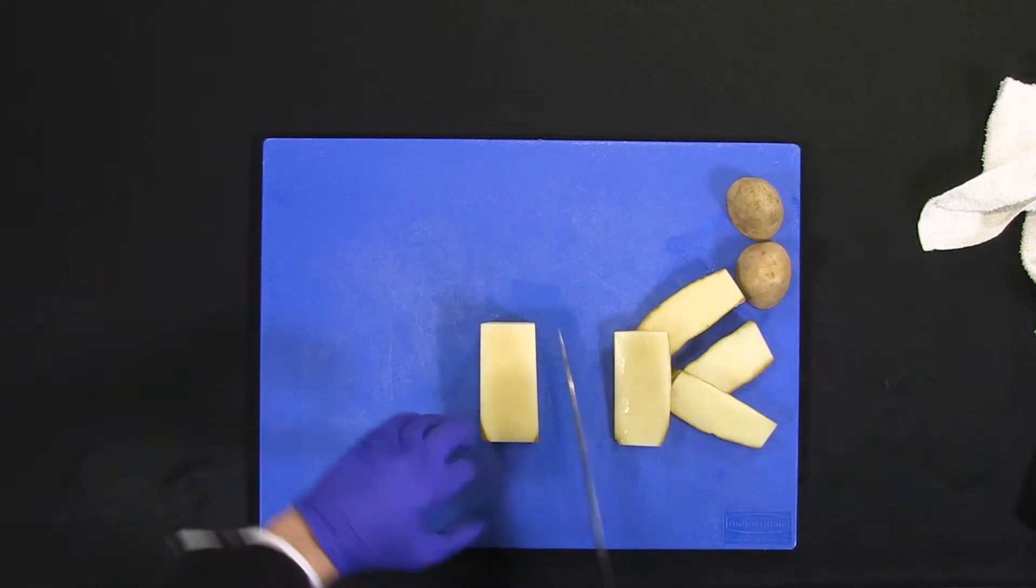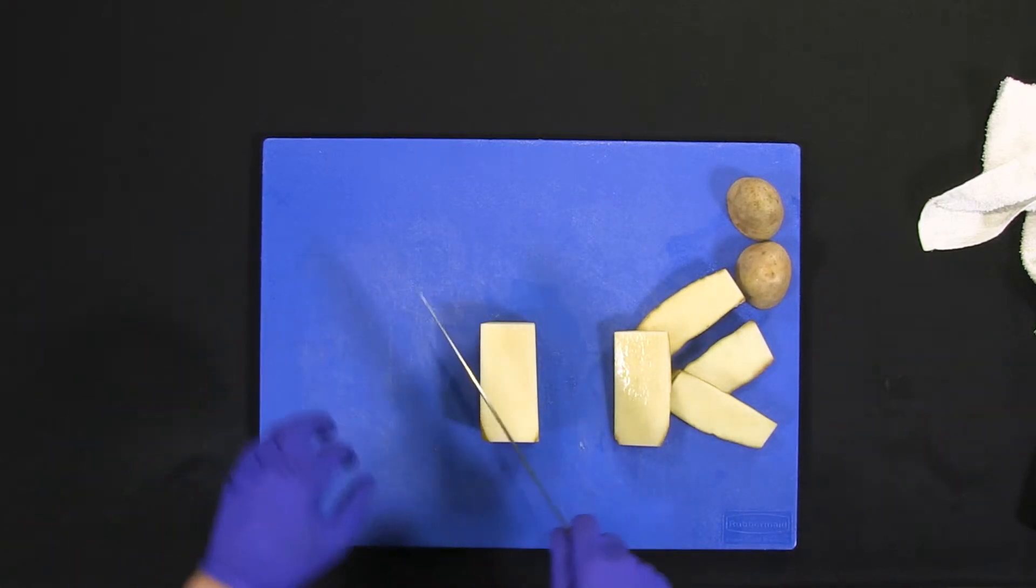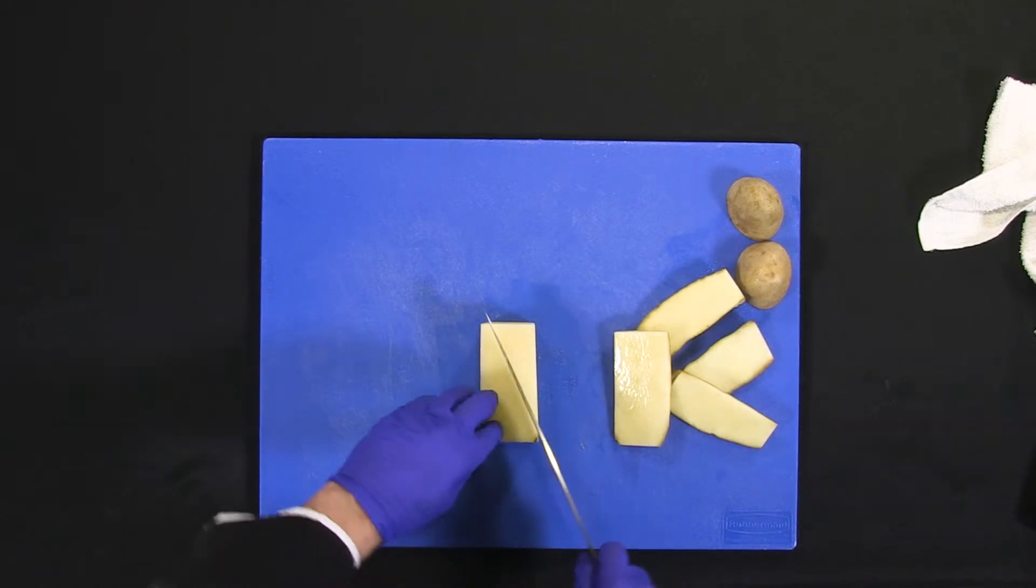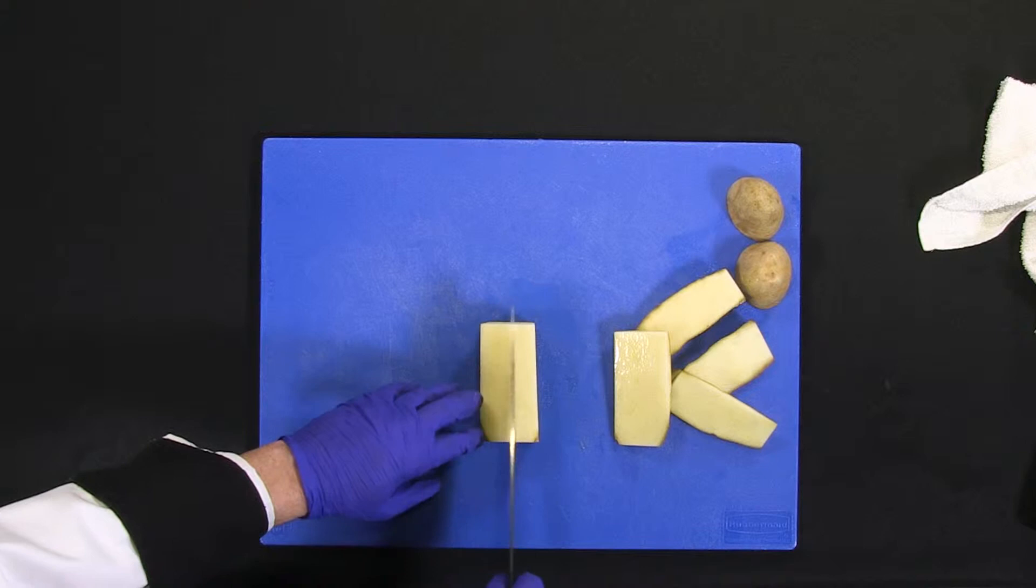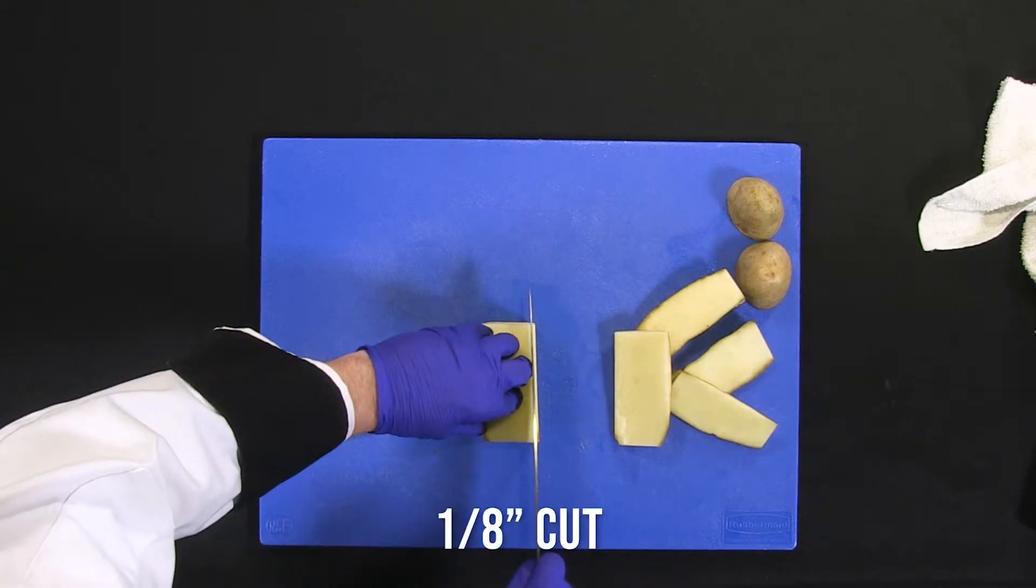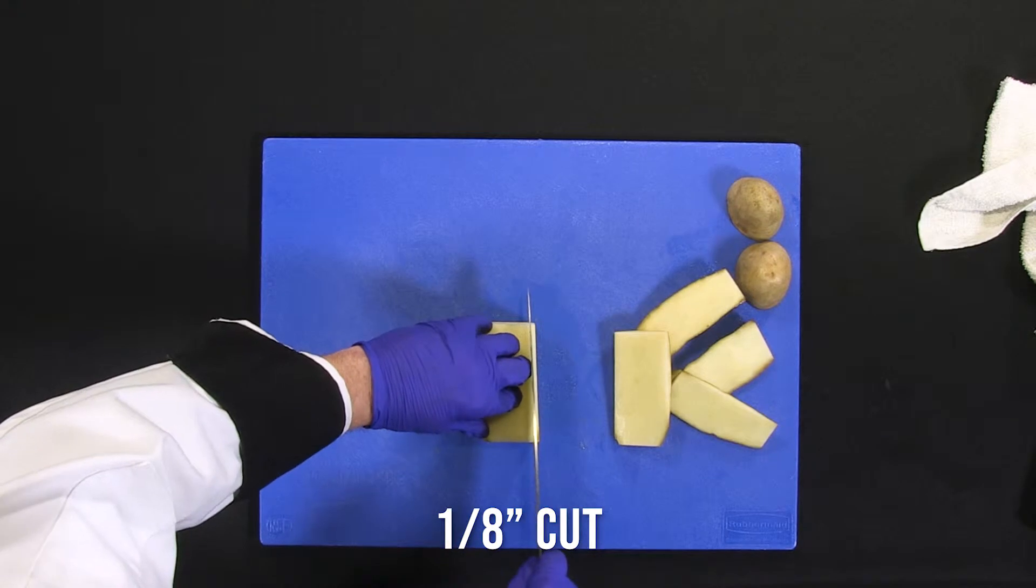Watch your stand, watch how you stand. If you stand like this, you're going to give your knife a degree on this side. If you stand like this, you're going to give your knife another angle, and that's going to affect your cut. So watch your stand, how you're going to cut.